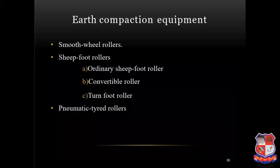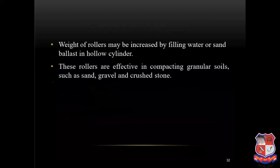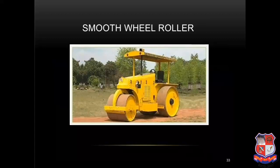Earth compaction equipment: smooth wheel roller, sheep foot roller — divided into three categories: ordinary sheep foot roller, convertible roller and tamping foot roller — and pneumatic tired rollers. Smooth wheel rollers use plain steel rollers, self-propelled type, weighing from 5 to 15 tons. Used for ordinary rolling work where deep compaction is not required. This roller may have one front and two rear wheels, the rear wheels being usually larger in diameter. Weight of rollers may be increased by filling water or sand ballast in the hollow cylinder. These rollers are effective in compacting granular soil such as sand, gravel and crushed stone.